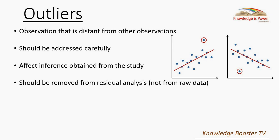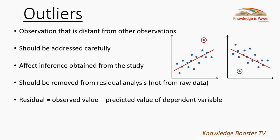We should always remember that outliers should be removed only from residual analysis, not from the raw data. Once we expose subjects to treatment in a scientific study, it is assumed that the treatment will affect the readings obtained from those observations — affecting normality and homogeneity of variance. So we should always do this kind of analysis from residuals, which is basically the difference between the observed value and the predicted value of the dependent variable.